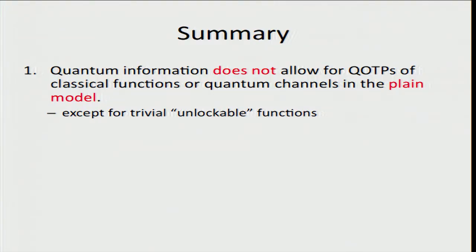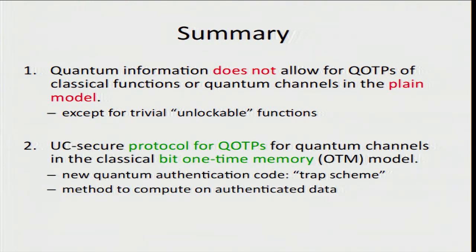To wrap up: in this paper we've investigated whether one-time programs are possible using quantum information. First, we found that quantum information doesn't allow for quantum one-time programs of either classical functions or quantum channels in the plain model — without hardware assumptions — except for a class of trivial unlockable functions. Second, we've shown a UC secure protocol for quantum one-time programs for quantum channels in the classical bit one-time memory model, using a new authentication code called the trap scheme and a method for computing on authenticated data. Thank you very much.